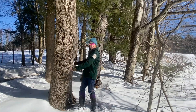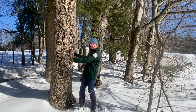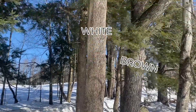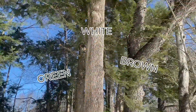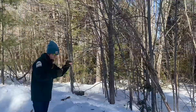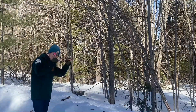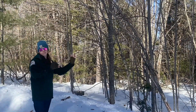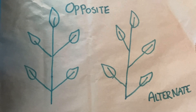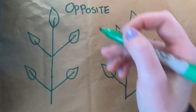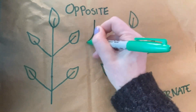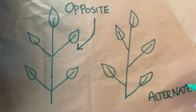We have three native ash trees common in Maine: white, brown, and green. One of the best ways to identify trees is to look at their leaves, but in the winter that can be pretty tricky for the deciduous species that drop their leaves in the fall. I like to start narrowing down potential species by taking a look at the branch arrangement.